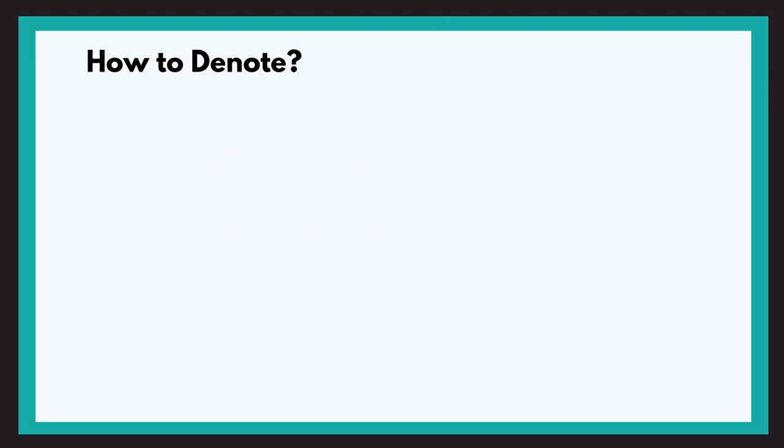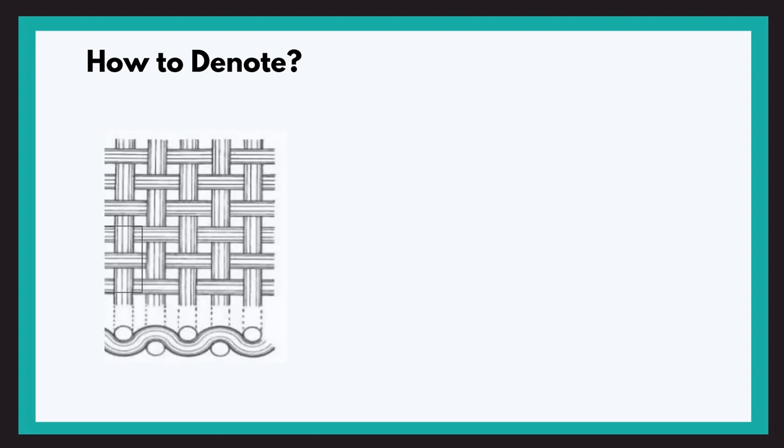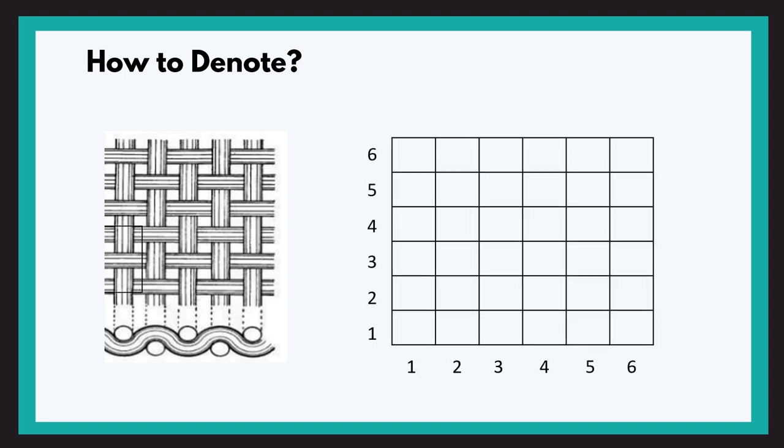Now let us see how to denote the movement of the threads while marking a design. Consider this as the fabric — the vertical threads are the warp and the horizontal threads are the weft. For easy understanding, circles below denote the warp threads and the wavy yarn is the weft thread.